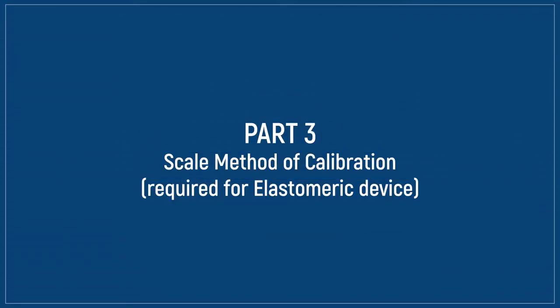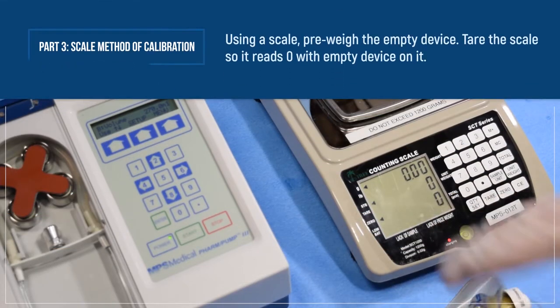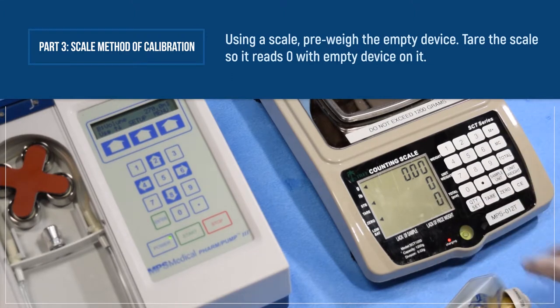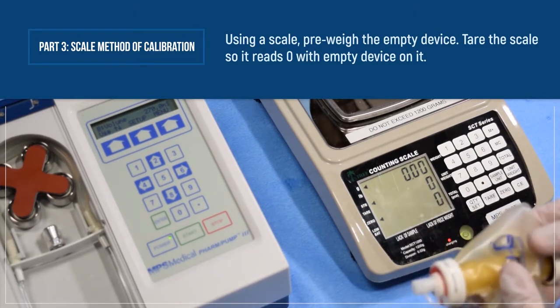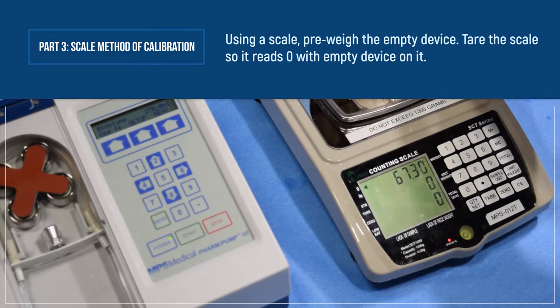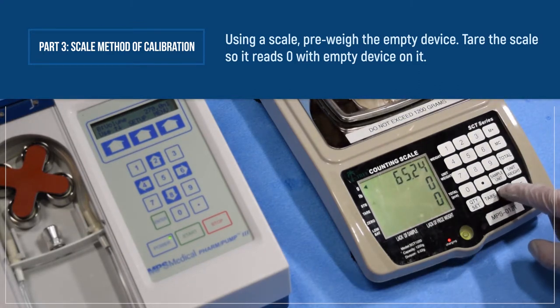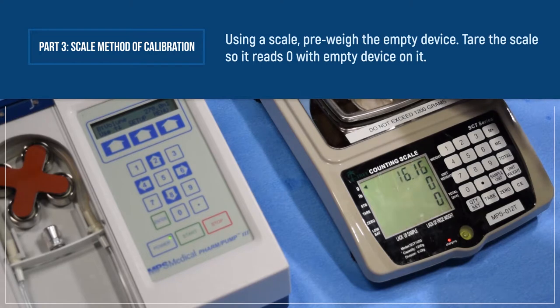Part 3, Scale Method of Calibration. Required for elastomeric device filling. Press zero when the device is on the scale and negative when the device is removed.